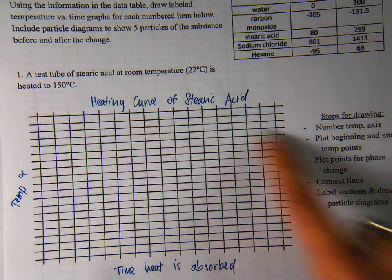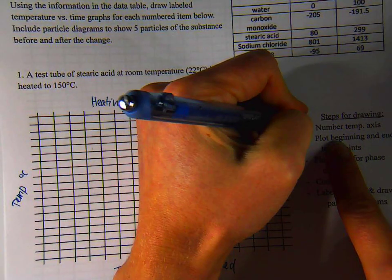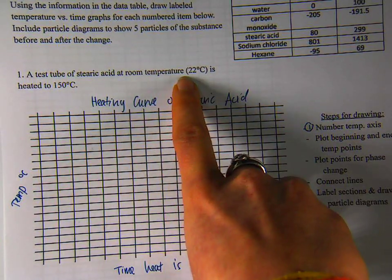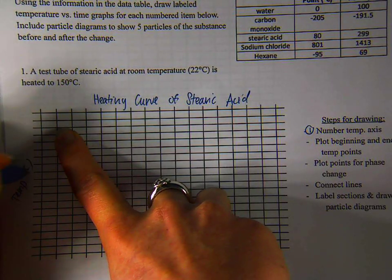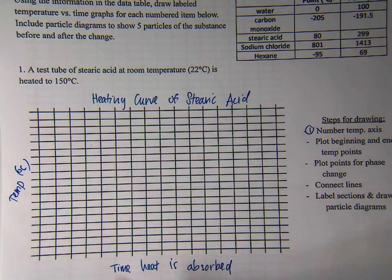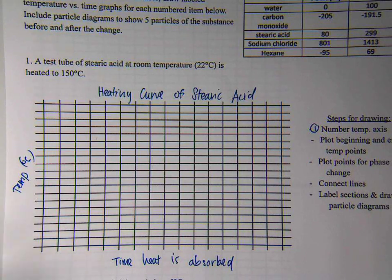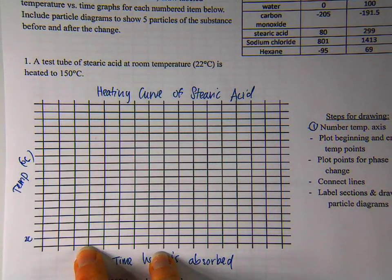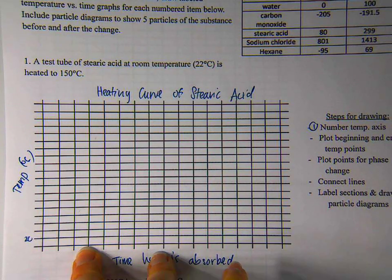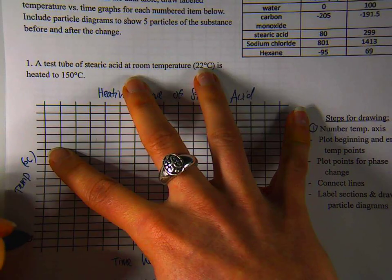Now let's take a moment to number the temperature axis. This is step one that I've given you over here. We are starting at 22 degrees Celsius and heating it up to 150 degrees Celsius. You need to think, how would it make sense to number the y-axis? For my graph, I'm going to start here at 20 and I think I'll number up by tens to get to 150.